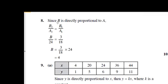It's given in the question, B is directly proportional to A. So by using the proportion method, we can write this formula: B₂ over A₂ equals B₁ by A₁. Now put all the values. The value of A₂ is 24, A₁ is 18, B₁ is 3, and we have to find the value of B.